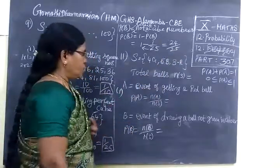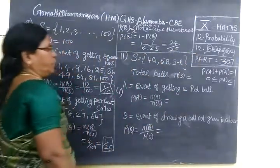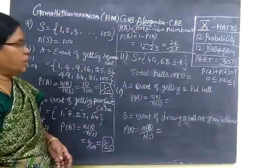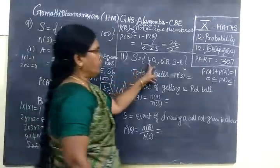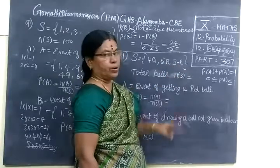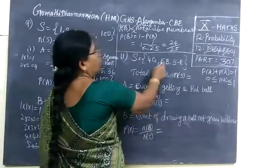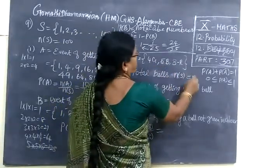Next we are going to start problem 11. In your bag there are 4 green balls, 5 blue balls, 3 red balls. So total number of balls equal to 4 plus 5 is 9, 9 plus 3 is 12.